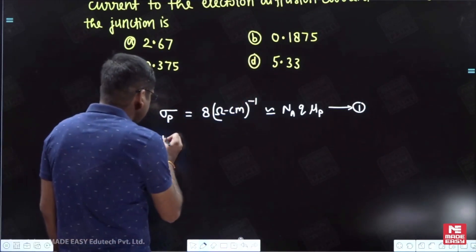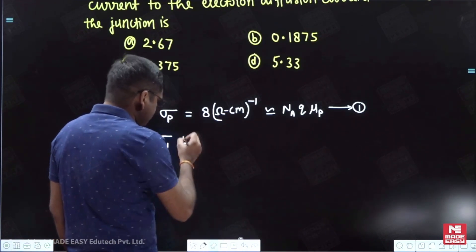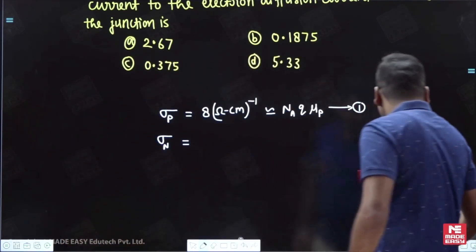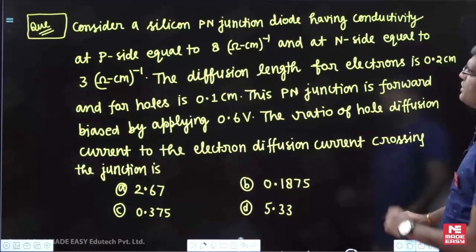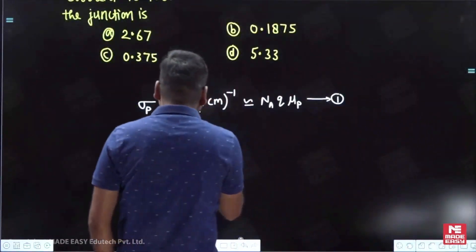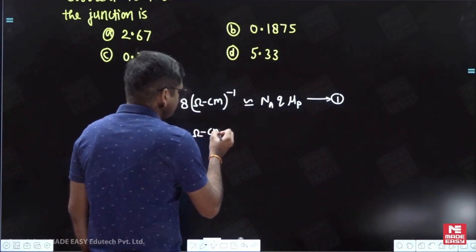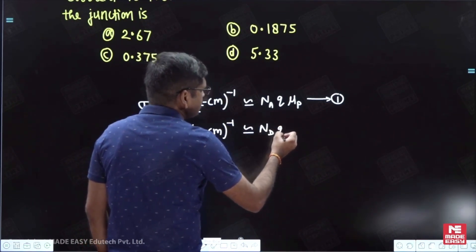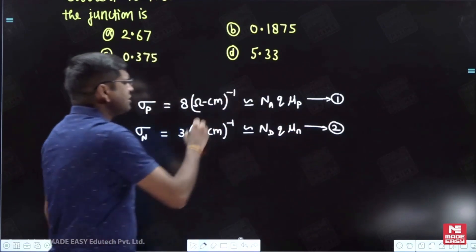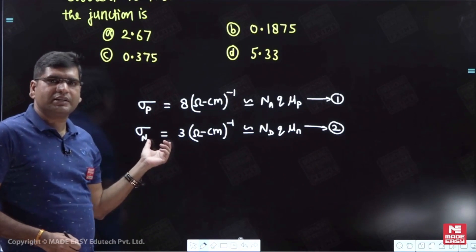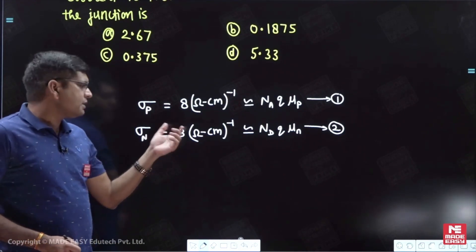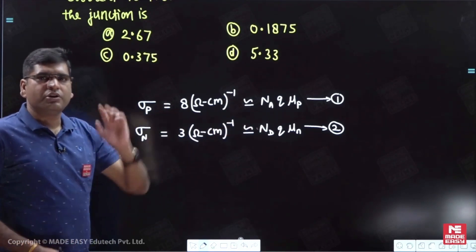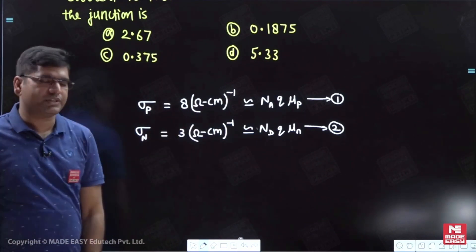Similarly, the conductivity at the N side is given as 3 ohm-centimeter inverse. This can be written as Nd (donor concentration) times Q times mu_n. We can neglect the contribution of electrons in the P side and the contribution of holes in conductivity at the N side. The majority carrier concentration is almost equal to the doping concentration used in developing these two equations.